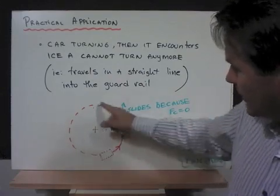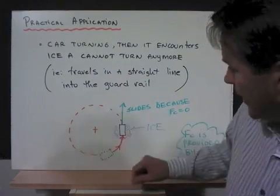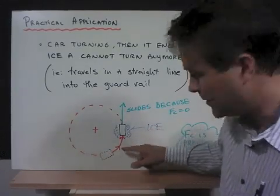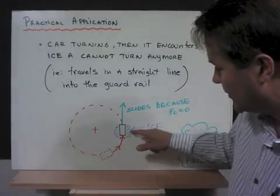So here I have a car traveling in a circle. And let's say as it travels in that circular path it encounters a patch of ice. As soon as it hits that patch of ice, there's no more centripetal force acting on the car.